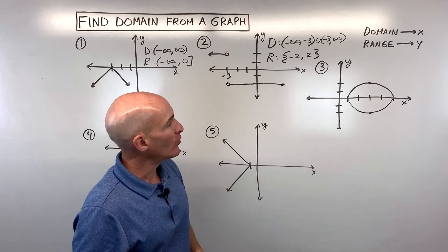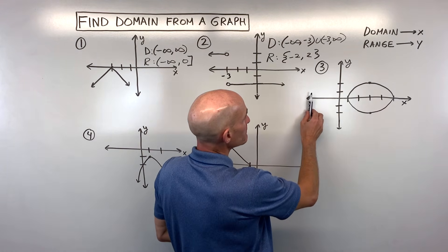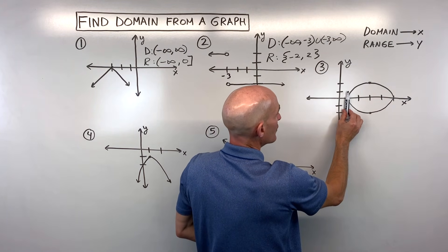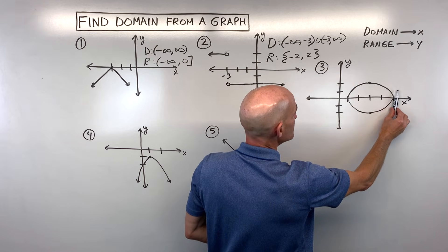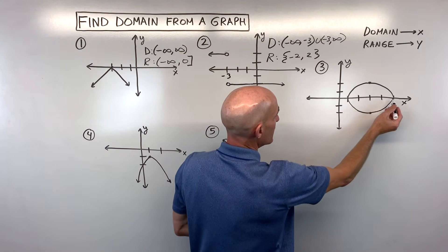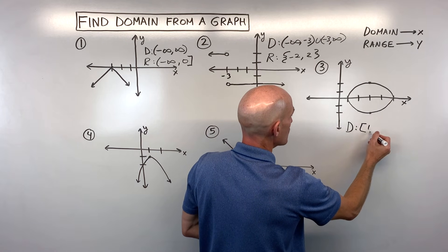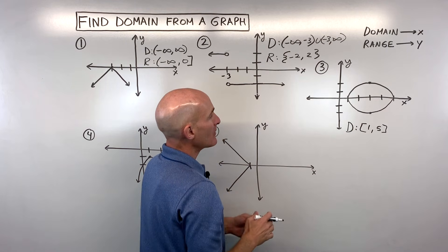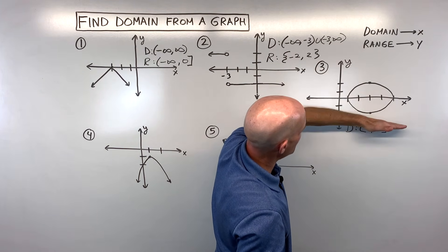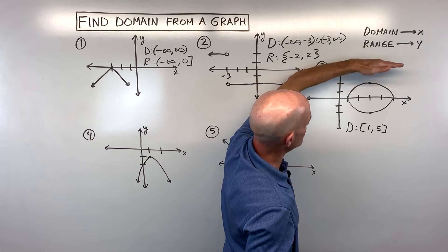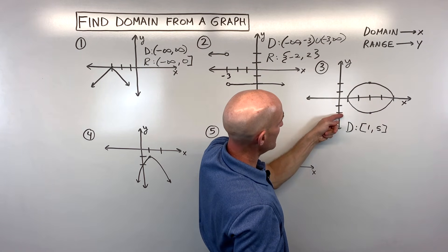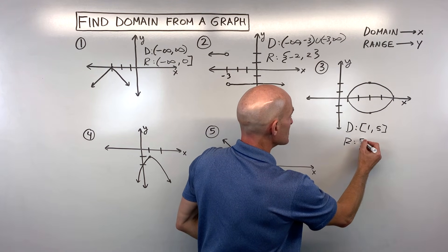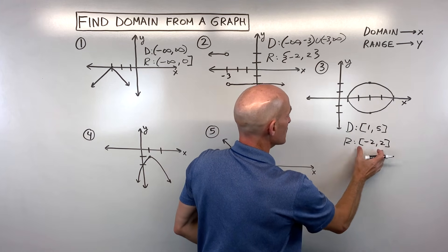For number three, what's the domain and range? For domain, scanning from left to right, it looks like it goes from one to five, and it includes both one and five. So the domain is [1, 5] using square brackets. For the range, scanning from low to high in the vertical direction, the lowest it can be is negative two and it goes up to positive two, so the range is [-2, 2], inclusive.